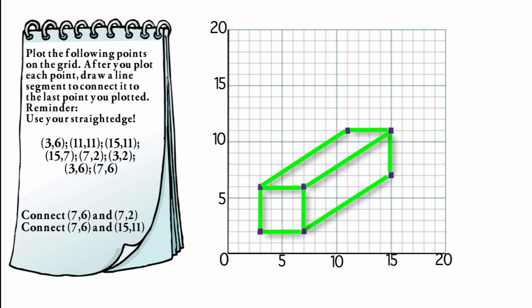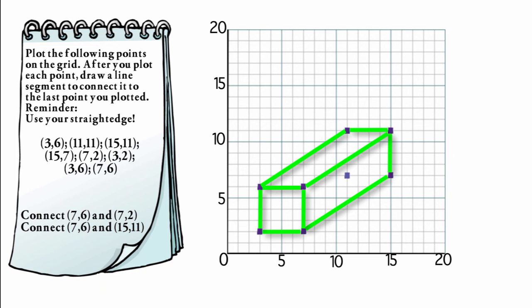So what ordered pair do we need to get this rectangular prism looking like a rectangular prism? To finish off this rectangular prism, the coordinate (11,7) would help us out. So now I'm going to connect (11,7) to (11,11). And I'll connect (11,7) to (15,7). And then finally, I will connect using a dotted line, the coordinates (3,2) to (11,7). And we are done.